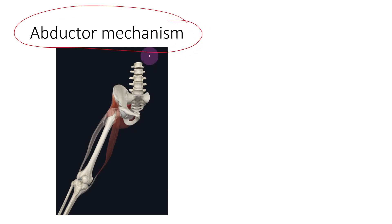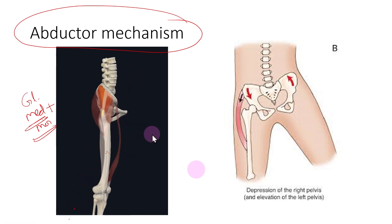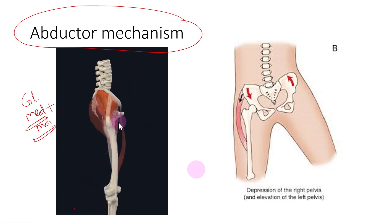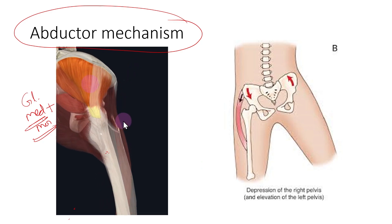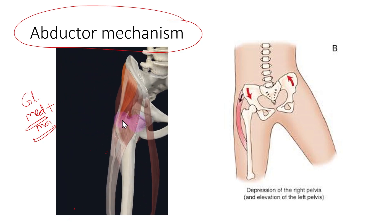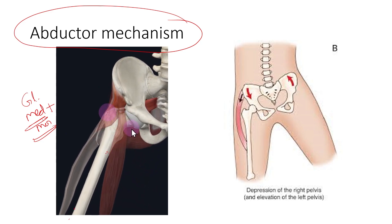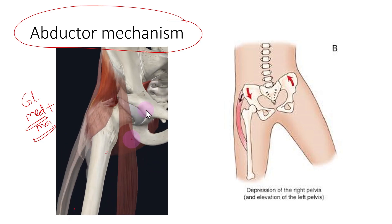To understand the Trendelenburg sign you need to know the abductor mechanism of the hip. During abduction, the gluteus medius and gluteus minimus are the two main abductor muscles that cause abduction. You can see the gluteus medius highlighted here — when that muscle contracts, abduction of the hip occurs.